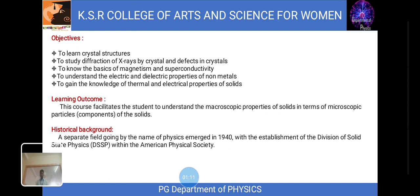Now we'll see the historical background of the subject. A separate field going by the name of physics emerged in the 1940s with the establishment of the division of solid state physics within the American Physical Society. Soon after World War 2, large communities of solid state physicists emerged in Europe, especially in England, Germany, and also the Soviet Union.